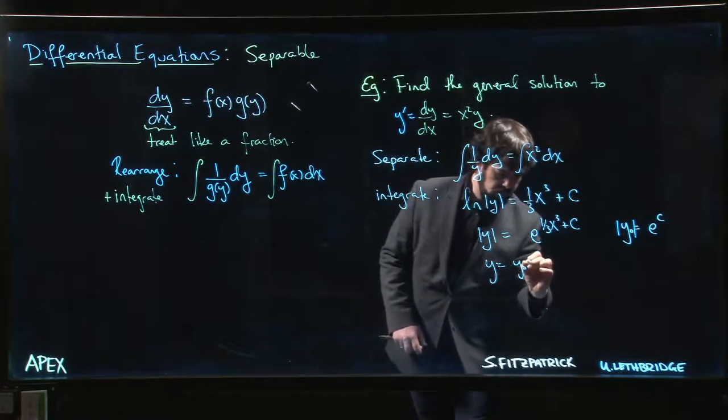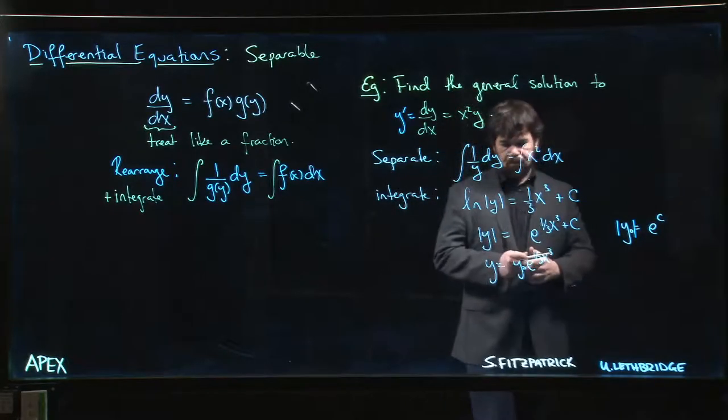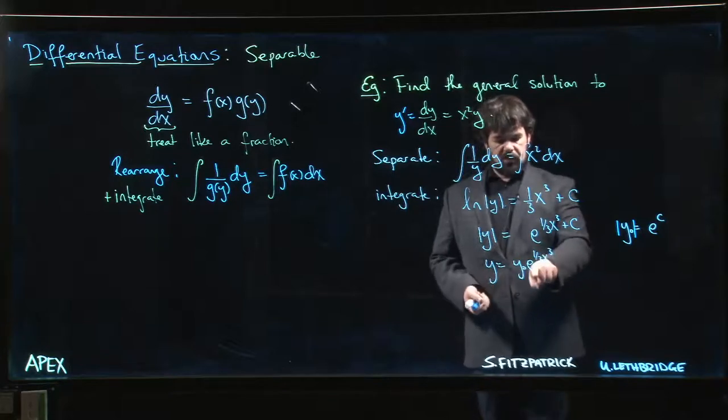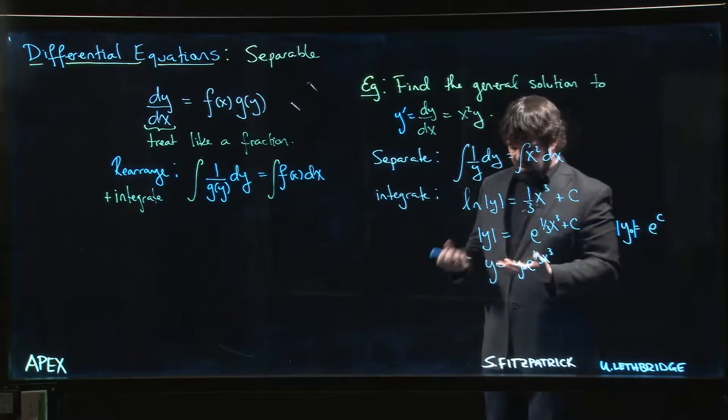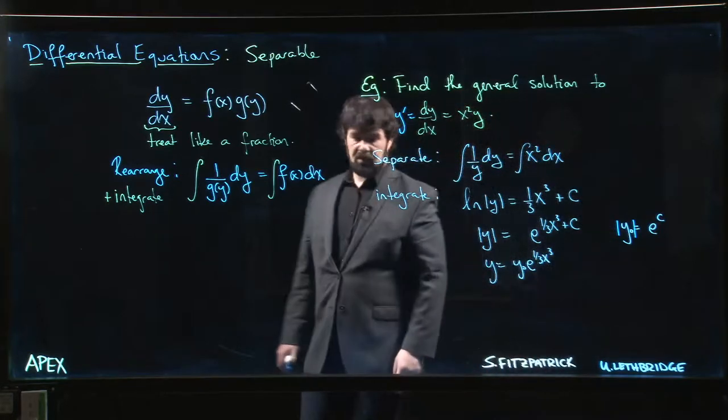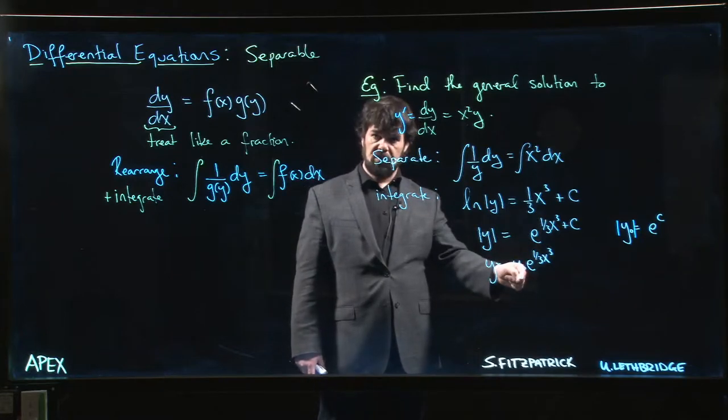And so that's essentially why you can drop the absolute value, because if there was a minus sign it's going to be accounted for by this constant out front.